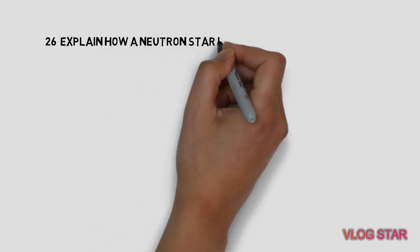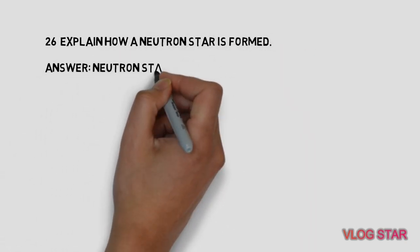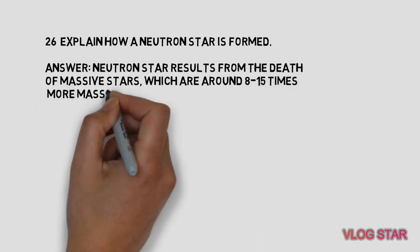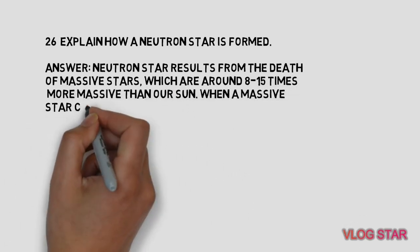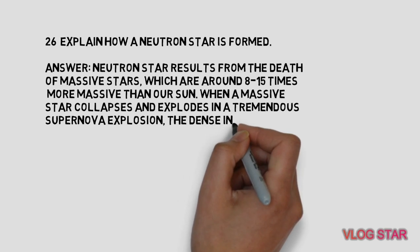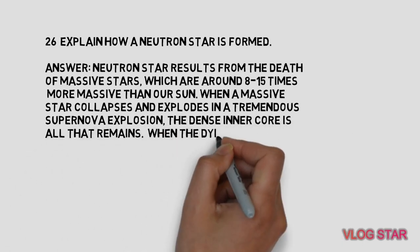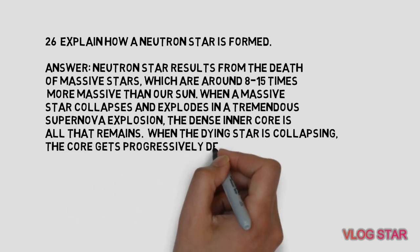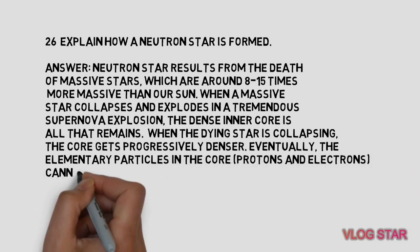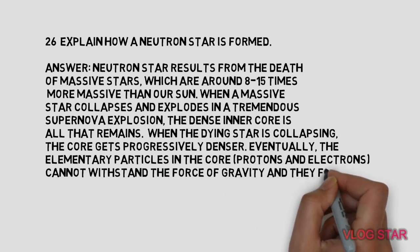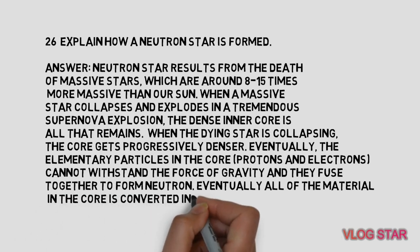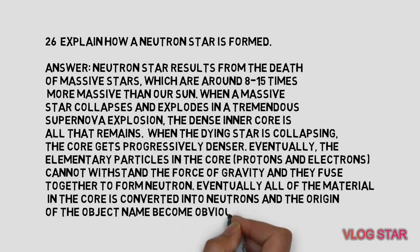Explain how a neutron star is formed. Neutron stars result from the death of massive stars, around 8 to 15 times more massive than our sun. When a massive star collapses and explodes in a supernova explosion, the dense inner core remains. As the dying star collapses, the core becomes progressively denser until protons and electrons cannot withstand gravity and fuse together to form neutrons. Eventually all material in the core is converted into neutrons, giving origin to the neutron star.